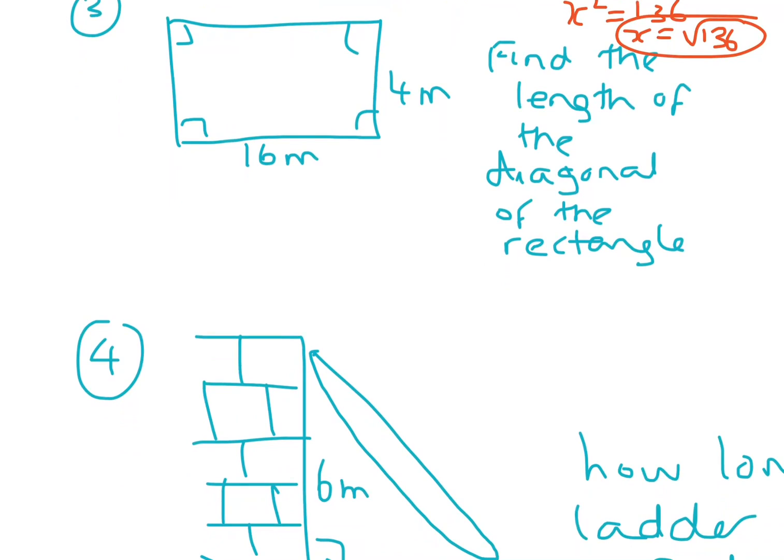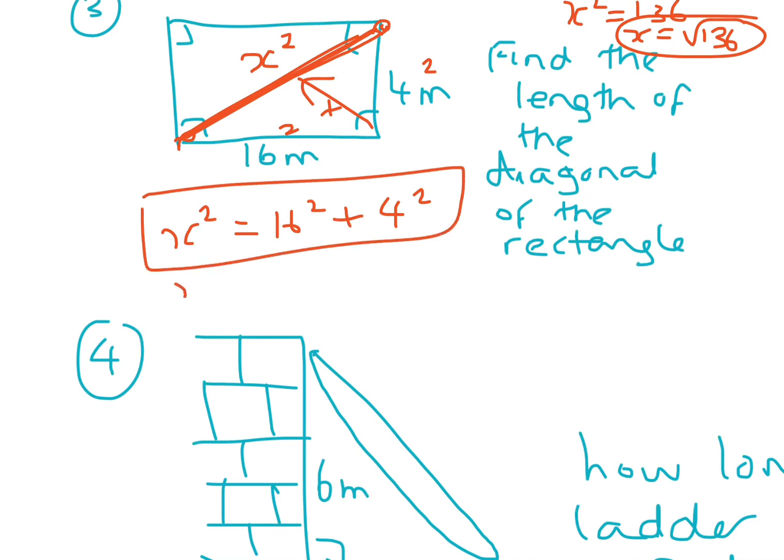Okay, so find the length of the diagonal. We'll put a line here. That's the diagonal. The diagonal goes from one corner to the other corner. So we put an X on there, draw an arrow from the triangle. So it's the hypotenuse. So you add them together. X squared equals 16 squared plus 4 squared. 16 times 16 is 256, 4 times 4 is 16. That'll be 272. And then you square root 272. And that would be your answer in the exact form.